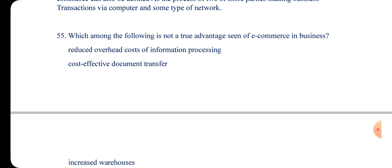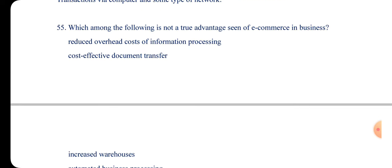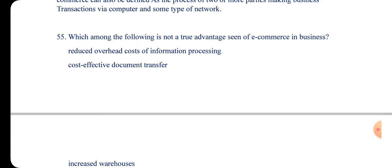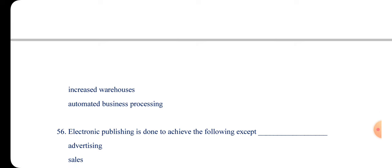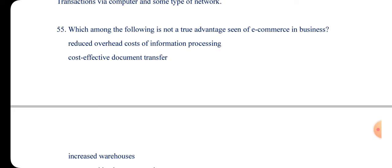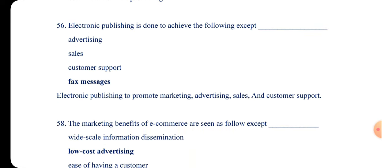Question 55: Which among the following is not a true advantage of e-commerce in business? Options are: reduce overhead cost of information processing; cost-effective document transfer; increased warehouses; and automated business processing. Please drop the answer in the comments. The answer was already explained — increased warehouses is not a business advantage of e-commerce.